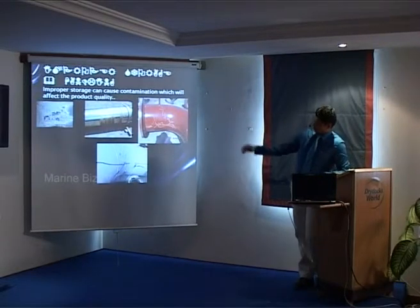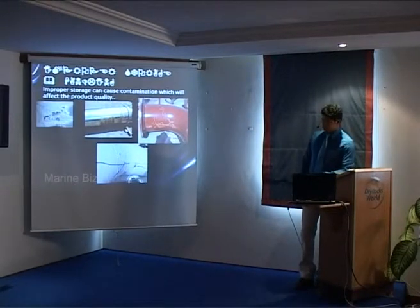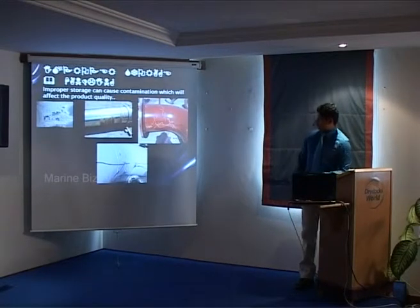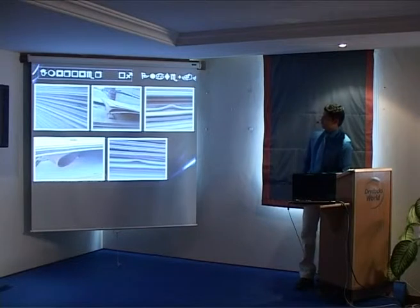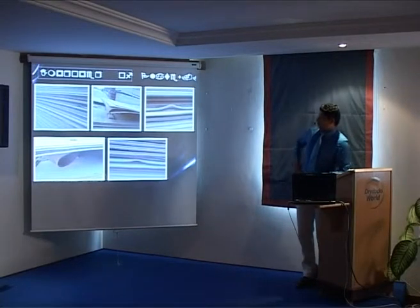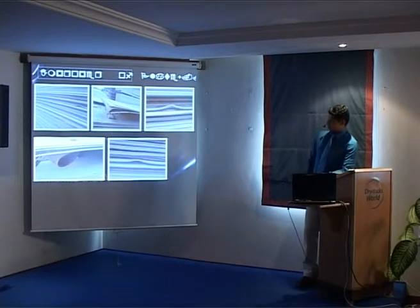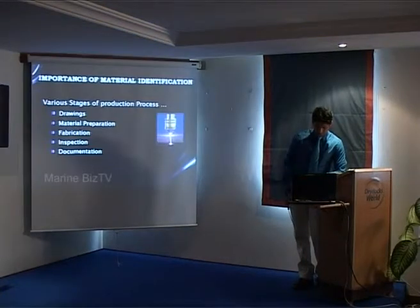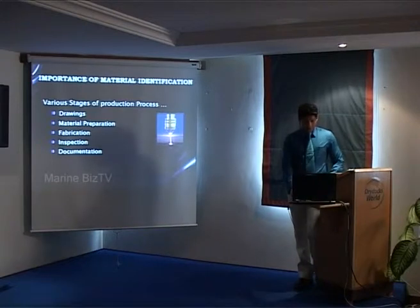These are some examples of contaminations identified on the plate and some damages because of handling. You can see in the center slide a stainless steel pipe that got corroded because of carbon steel mixed with it. Because of improper handling, we can see scratches on the final product. And examples of plates with bends and dents — because of this, we won't be able to use these kinds of plates. Please ensure that plates are properly handled.